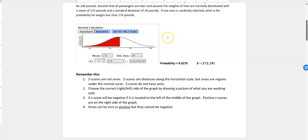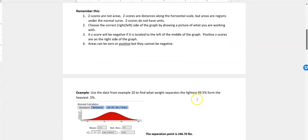Choose the correct right or left side of the graph by drawing the picture you're working with. That's so nice when you have the technology that draws it for you. A z-score is negative that's located on the left of the middle and right on the positive. Areas can be zero or positive, but they cannot be negative because we don't have a negative space. We can only go down to zero. So those are some things about z-scores to know.